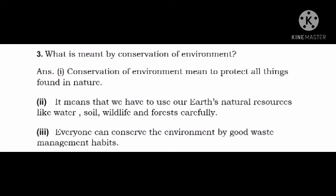Point 2: It means that we have to use our earth's natural resources like water, soil, wildlife and forest carefully. Spelling: It means — I-T M-E-A-N-S — that we have W-E H-A-V-E to use our earth's E-A-R-T-H-S natural N-A-T-U-R-A-L resources R-E-S-O-U-R-C-E-S like water W-A-T-E-R, soil S-O-I-L, wildlife W-I-L-D-L-I-F-E and forests F-O-R-E-S-T-S carefully C-A-R-E-F-U-L-L-Y. Point 2: It means that we have to use our earth's natural resources like water, soil, wildlife and forest carefully.